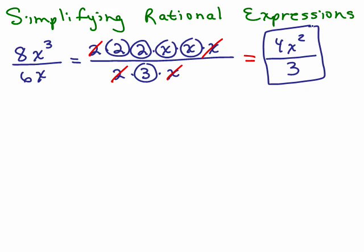Now you would get the same answer by doing regular canceling and then x cubed over x to the first, you could subtract exponents and get x squared for the numerator. So you should still get 4x squared over 3.